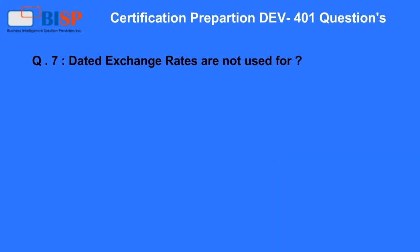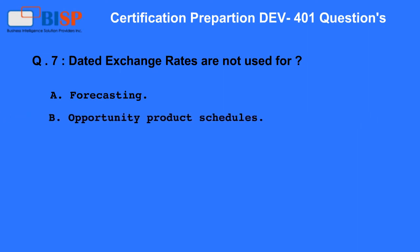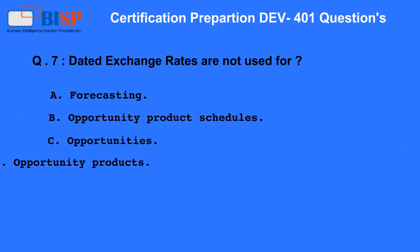Question 7. Dated exchange rates are not used for? A. Forecasting. B. Opportunity product schedules. C. Opportunities. D. Opportunity products.